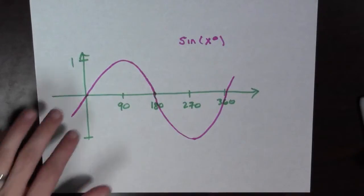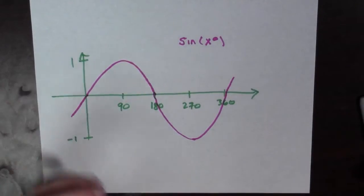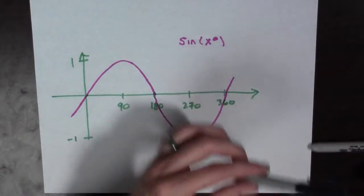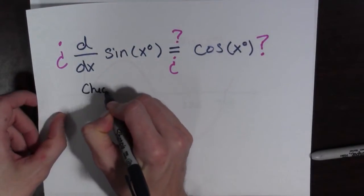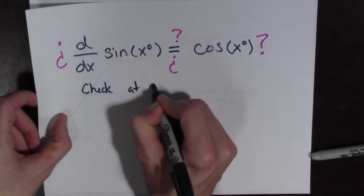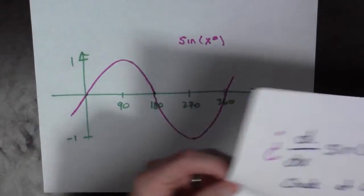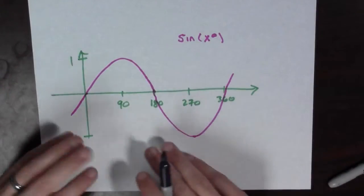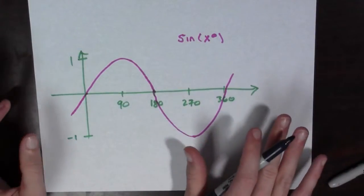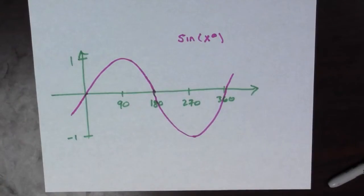Well, let's look right here at x equals zero. That's at zero degrees. So check at zero degrees. So here's the question. What is the slope of this curve at zero degrees? This is a little bit hard, but I'm just going to estimate it because estimating is good enough in this case.